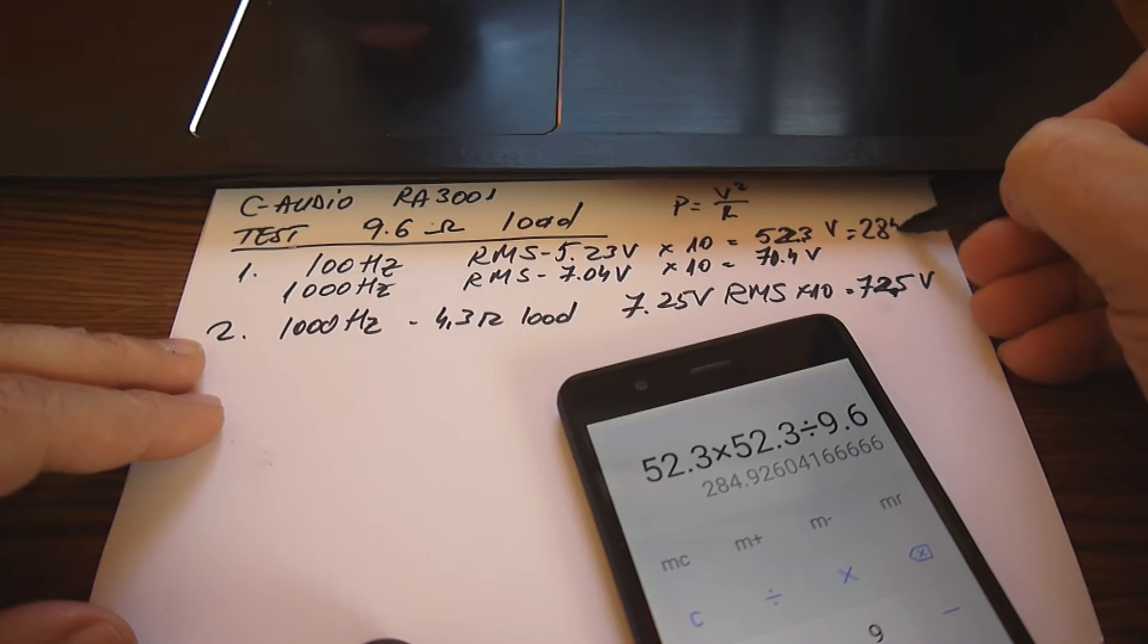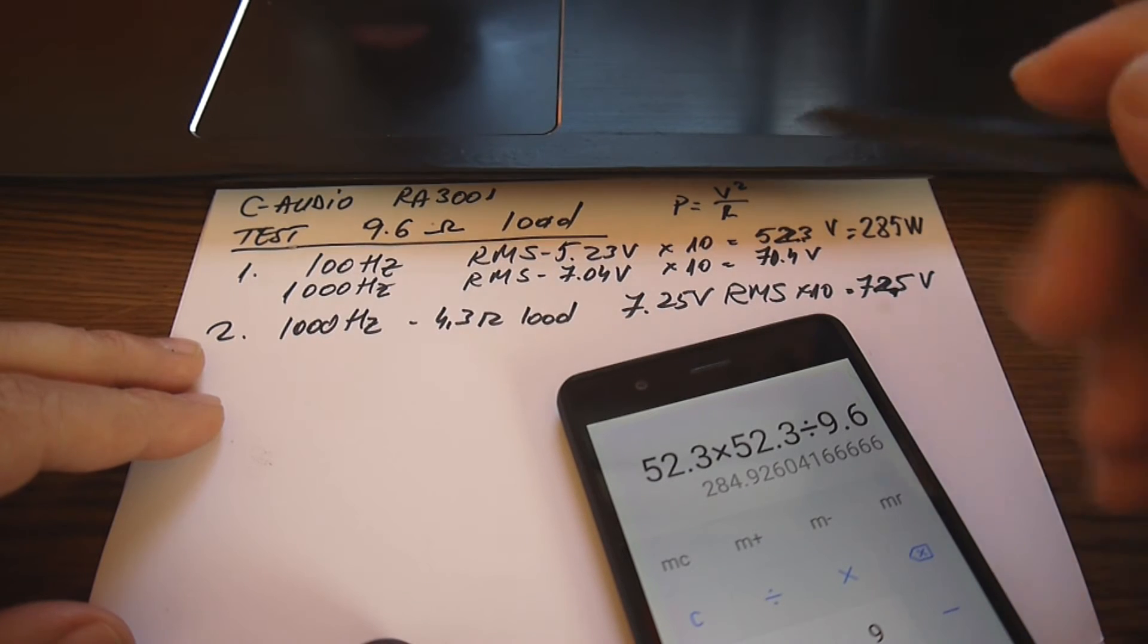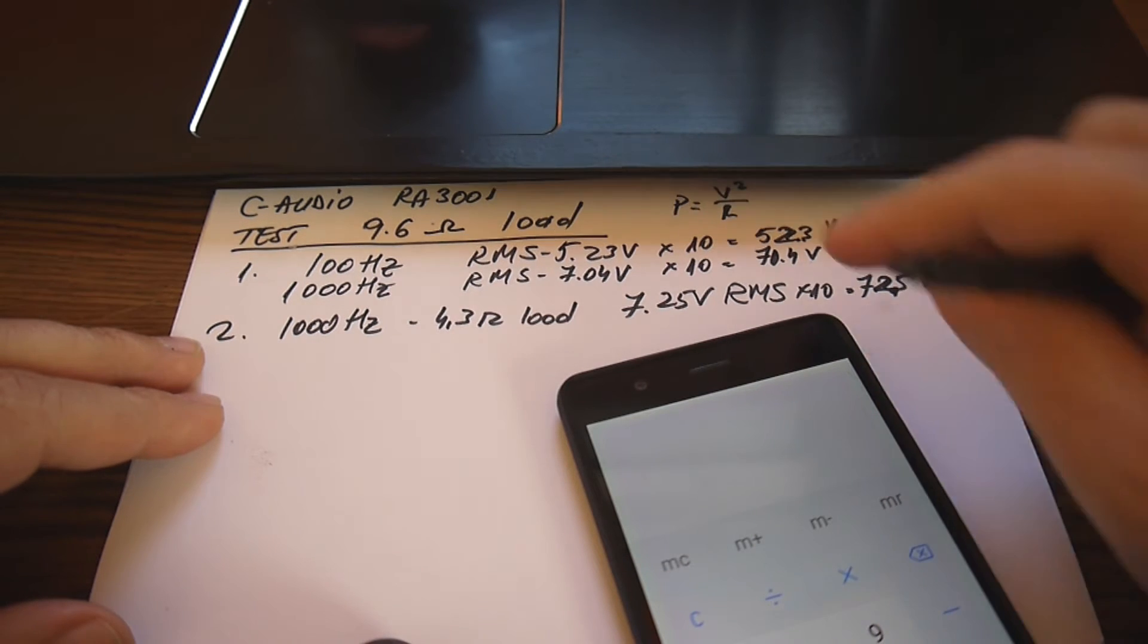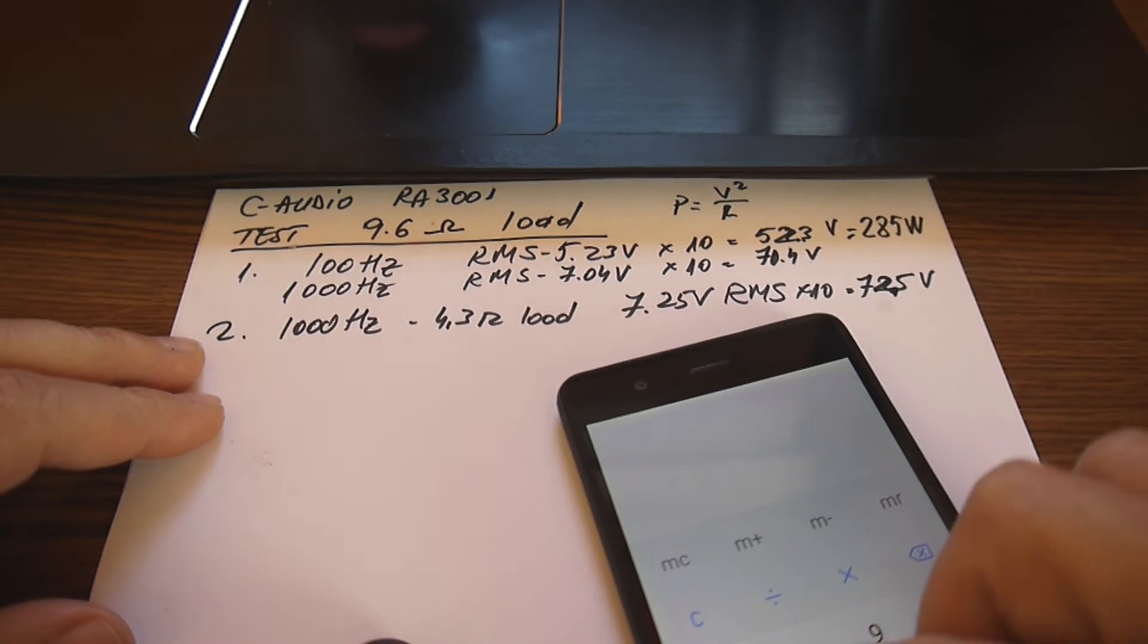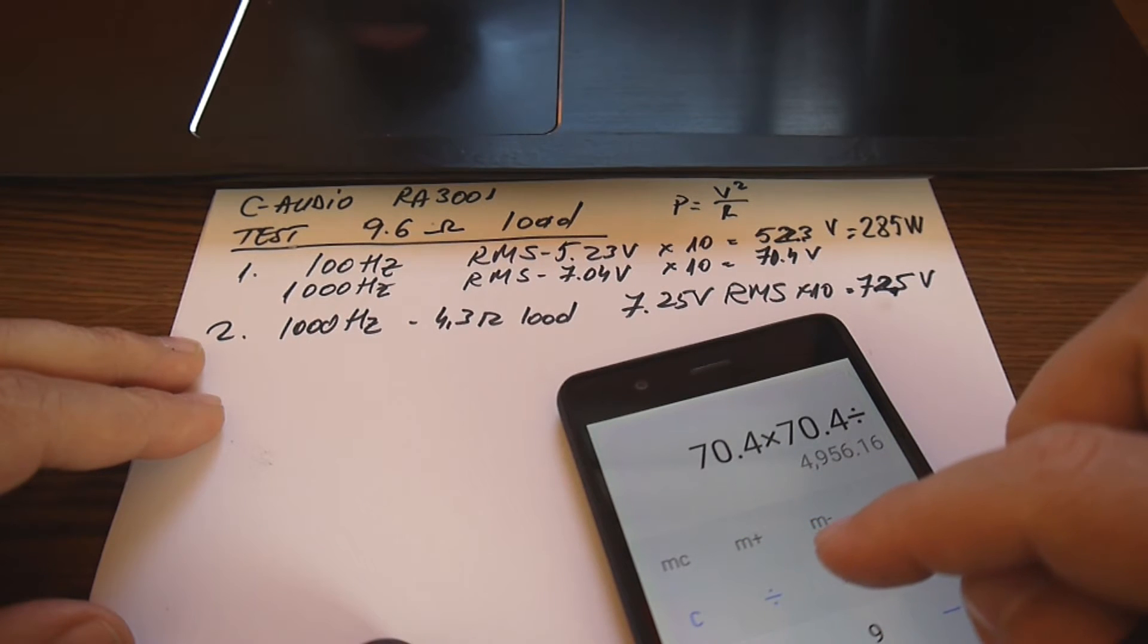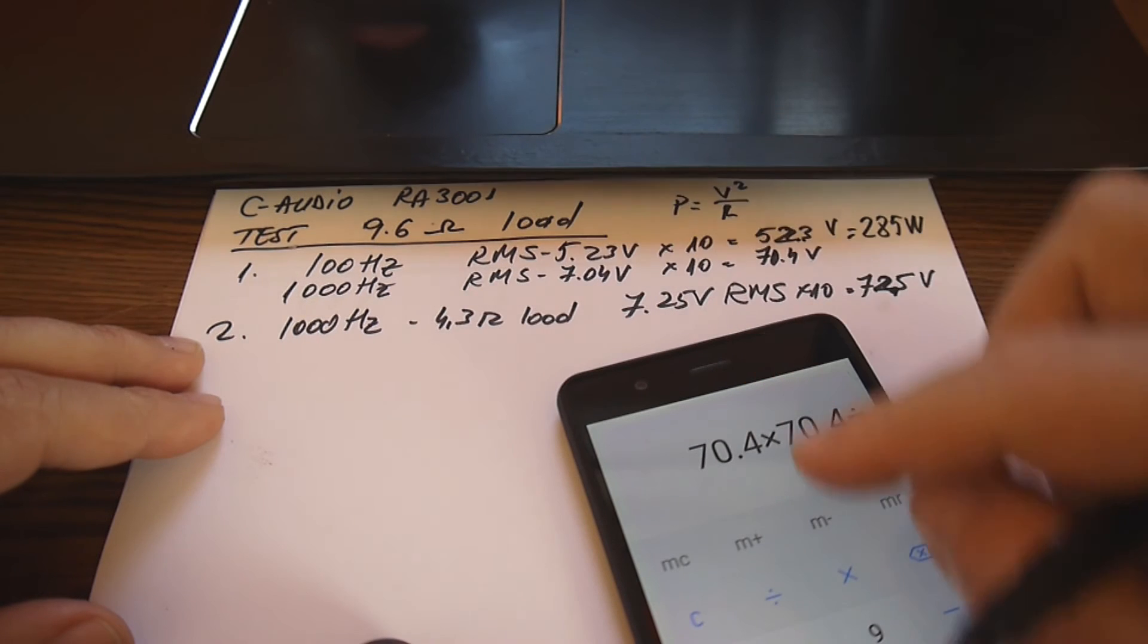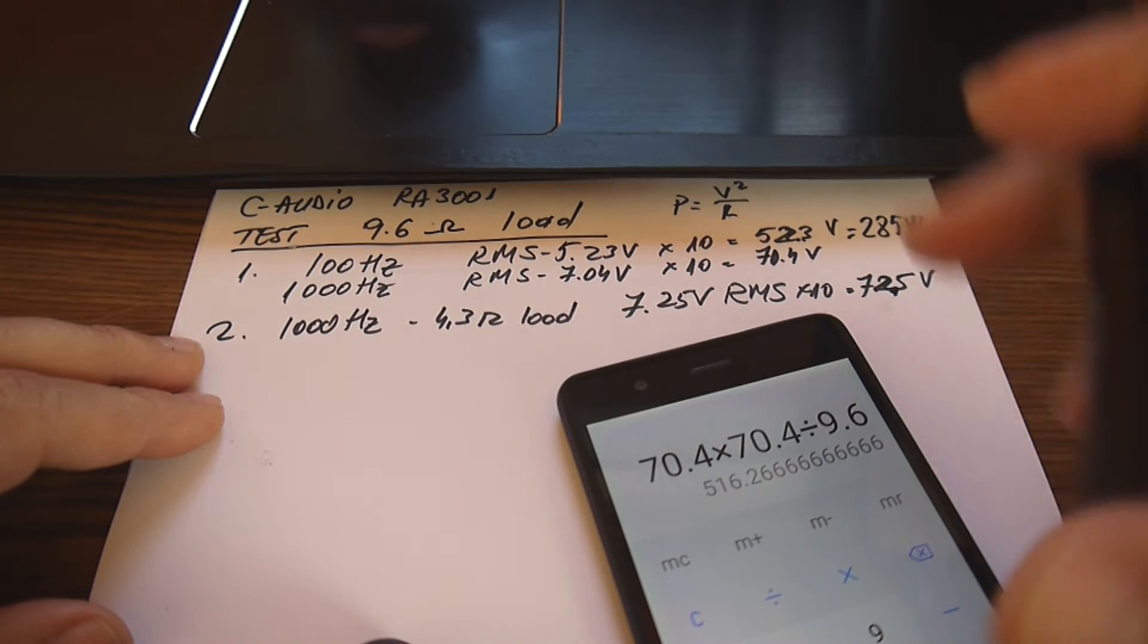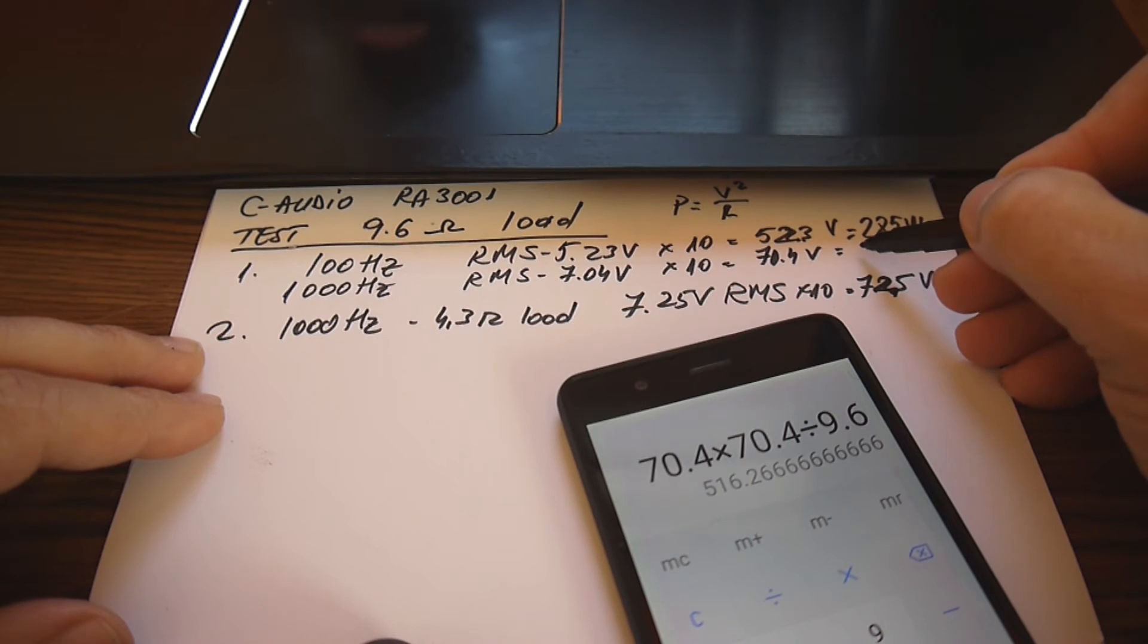Okay, 1000 hertz now. We have 70.4 volts times 70.4 divided by 9.6, and that gives 560 watts.